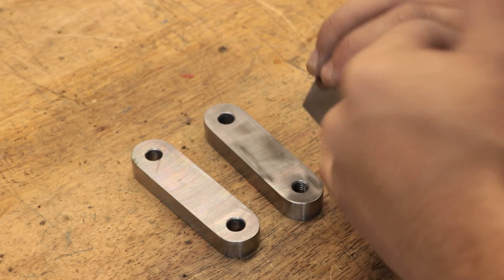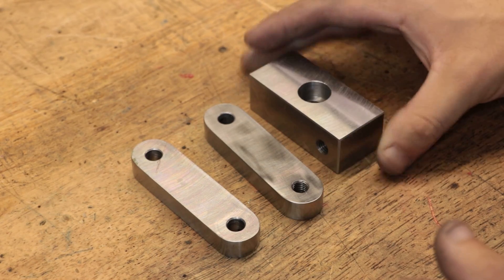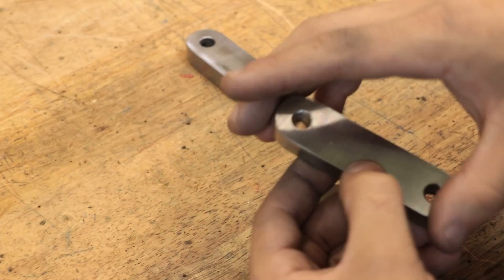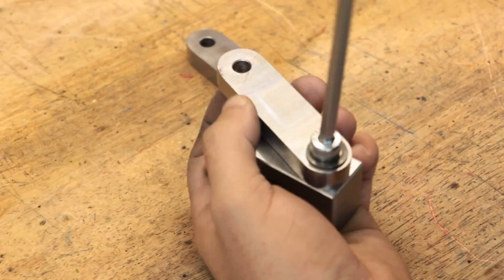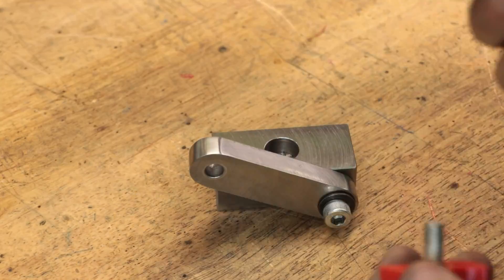And with the basic parts now made, we can now do a quick test fit. The arms bolt to each other, and they bolt to the base in order to make the vise stop.